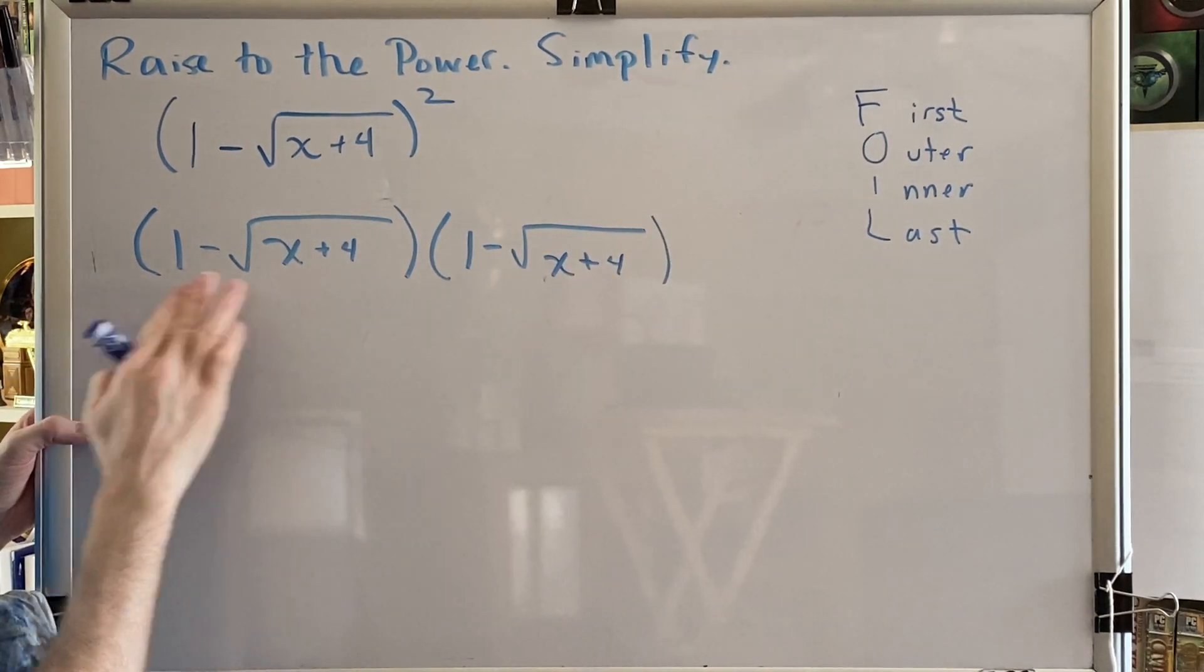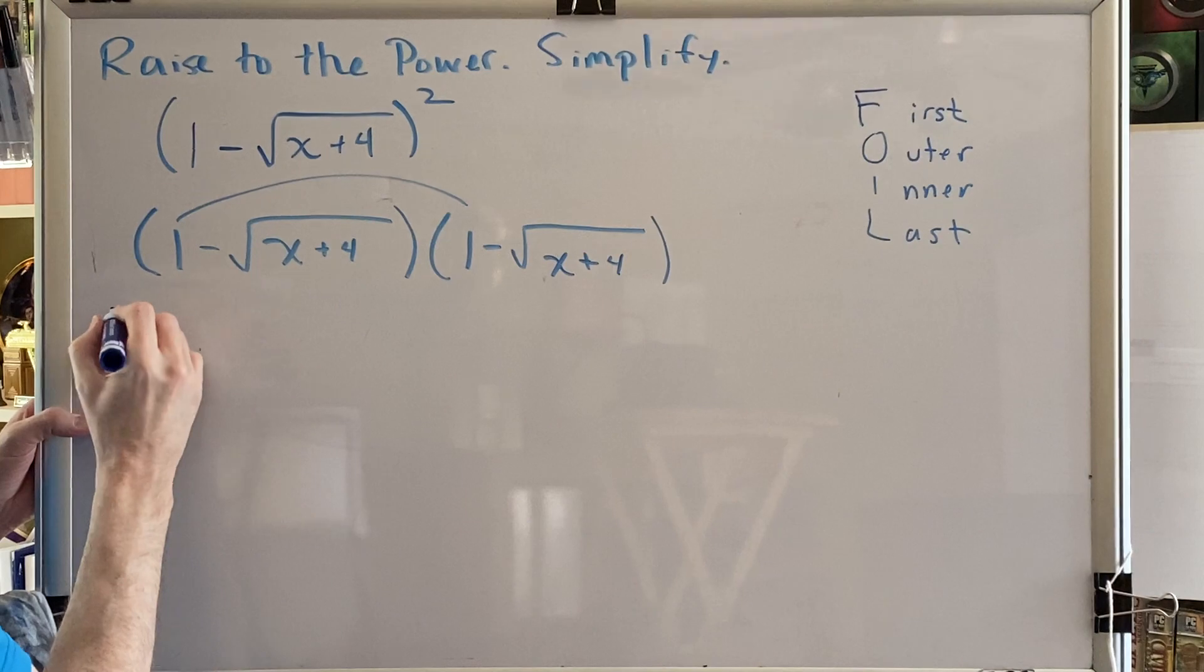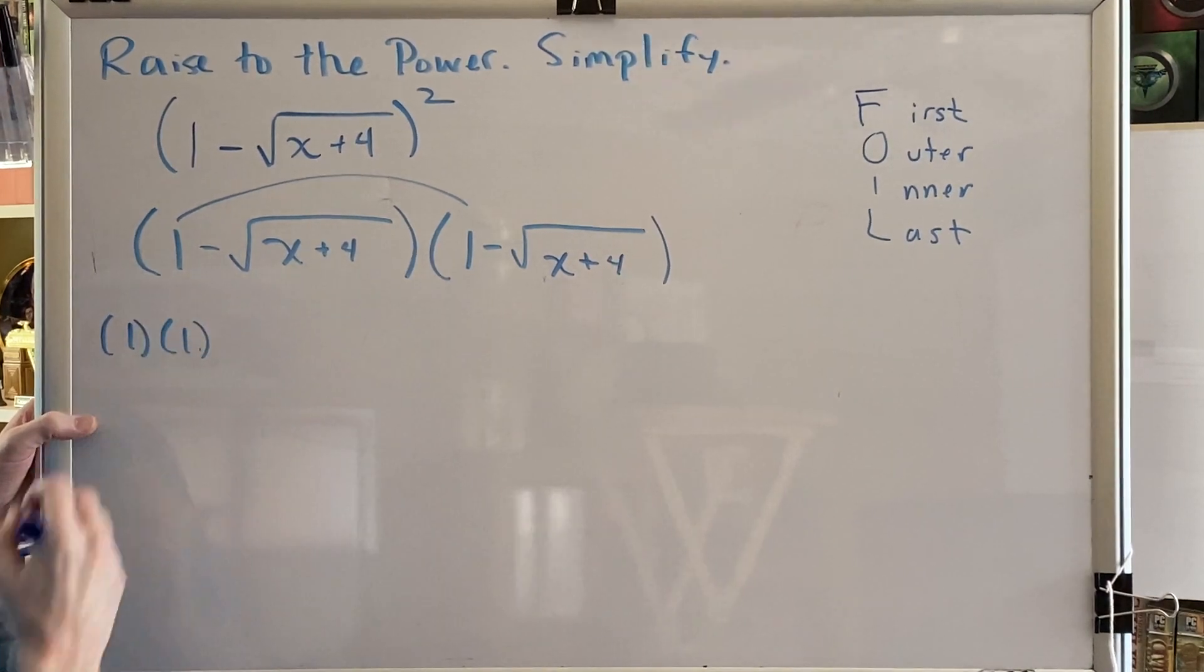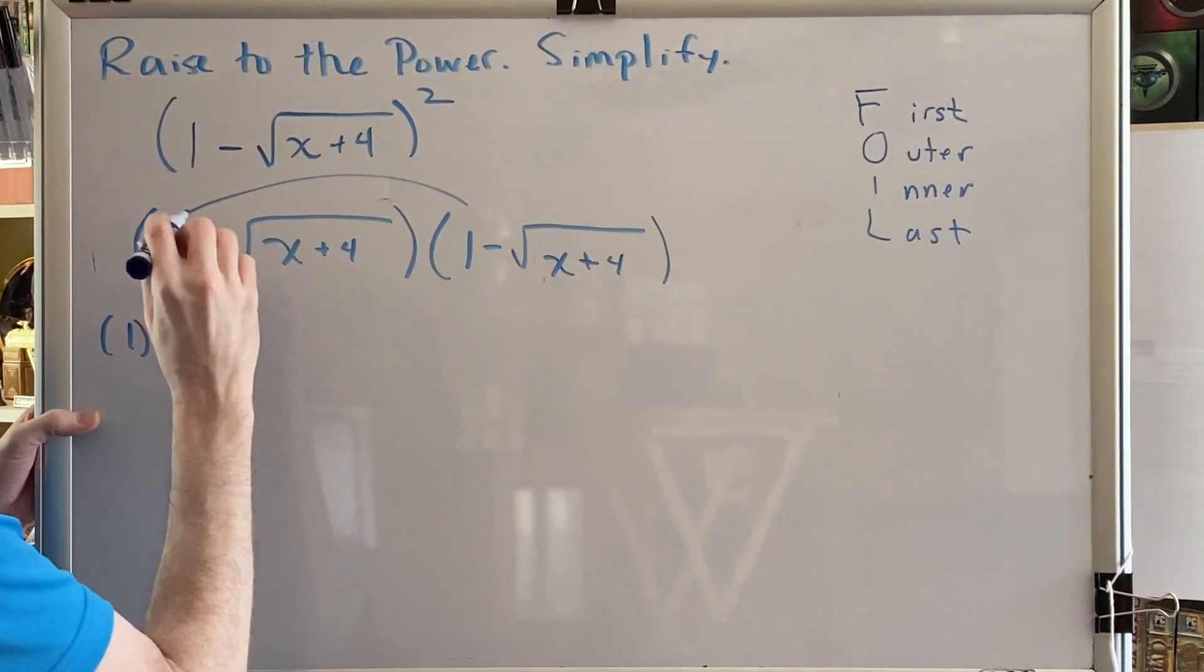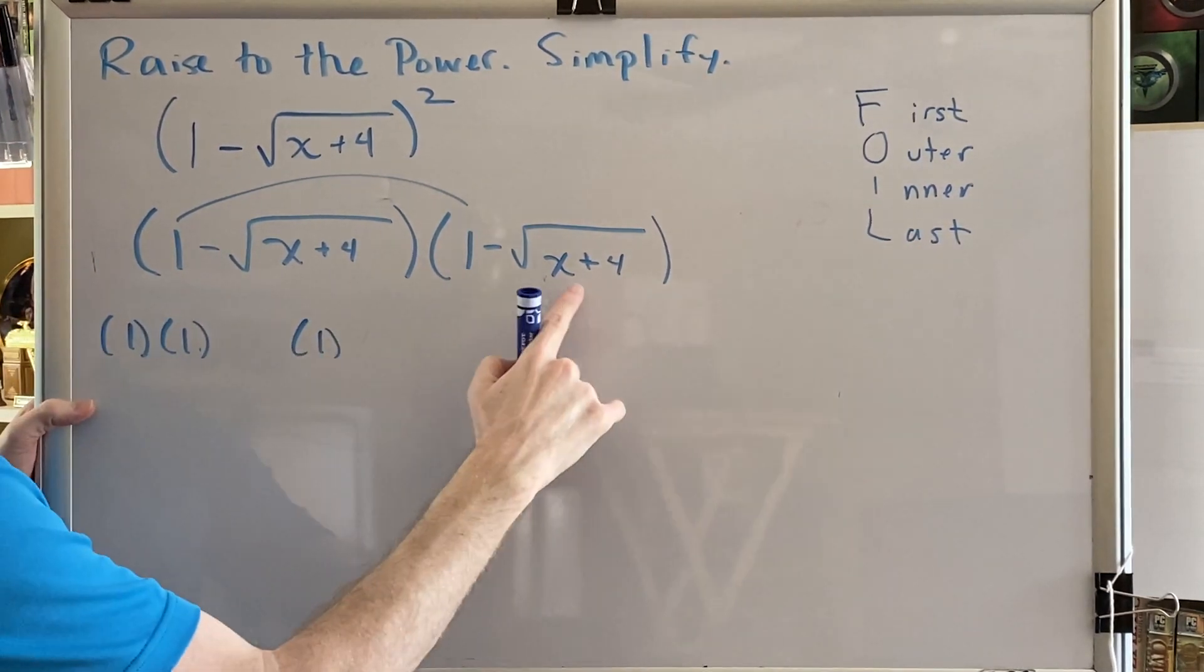F for first. So the first part of each parenthesis gets multiplied. So we have 1 times 1. Now outer. So the stuff on the outside, which would be this 1 and this radical.